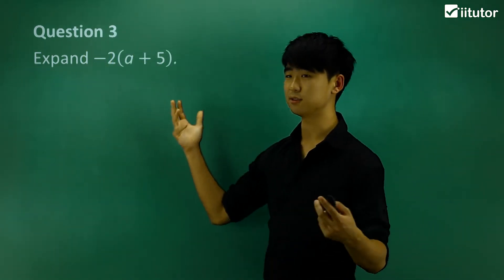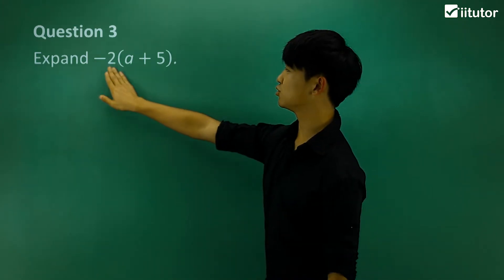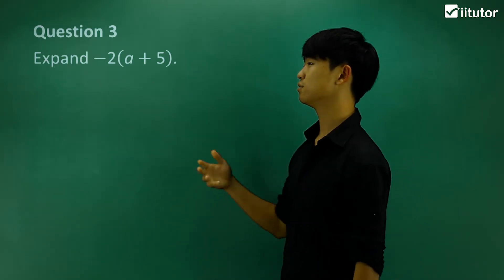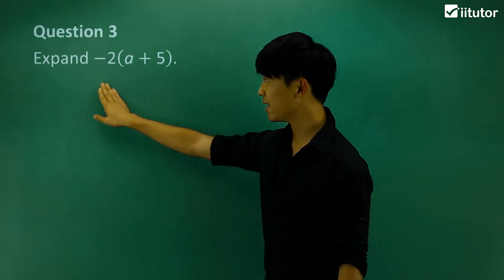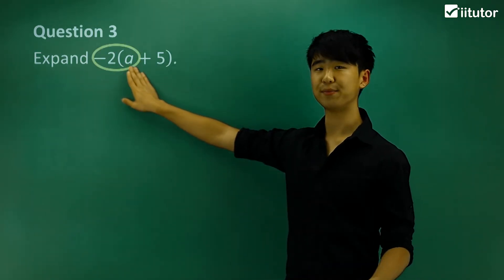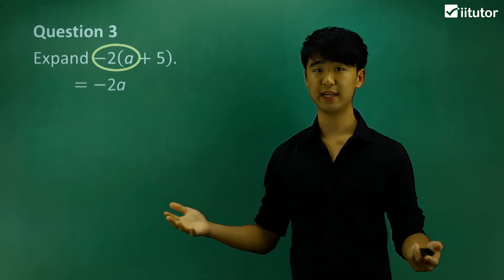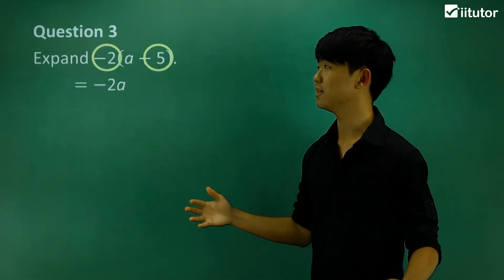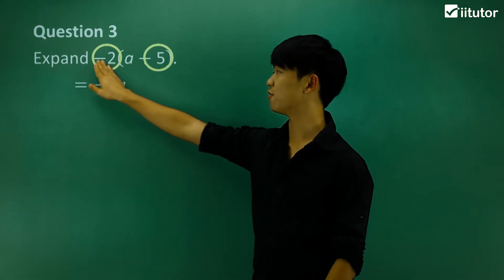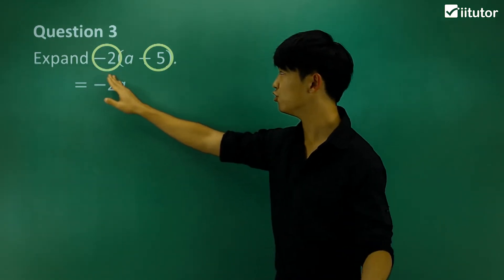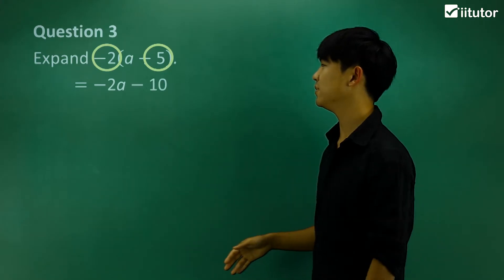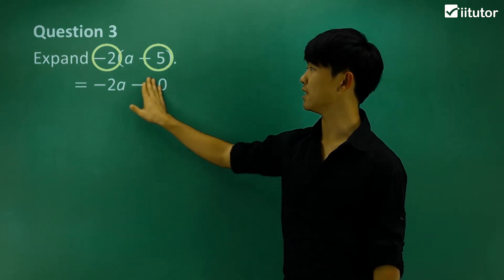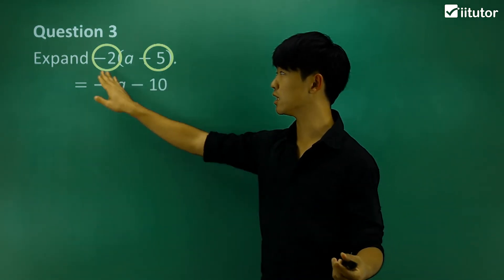This is where signs become very important. In question 3, we expand −2(a+5). Nothing really changes — we do the same process. Multiply negative 2 by the first term a to get −2a. Then multiply negative 2 by 5 — the sign in front comes with the whole number — so negative 2 multiplied by positive 5 gives negative 10. The expanded form is −2a − 10.